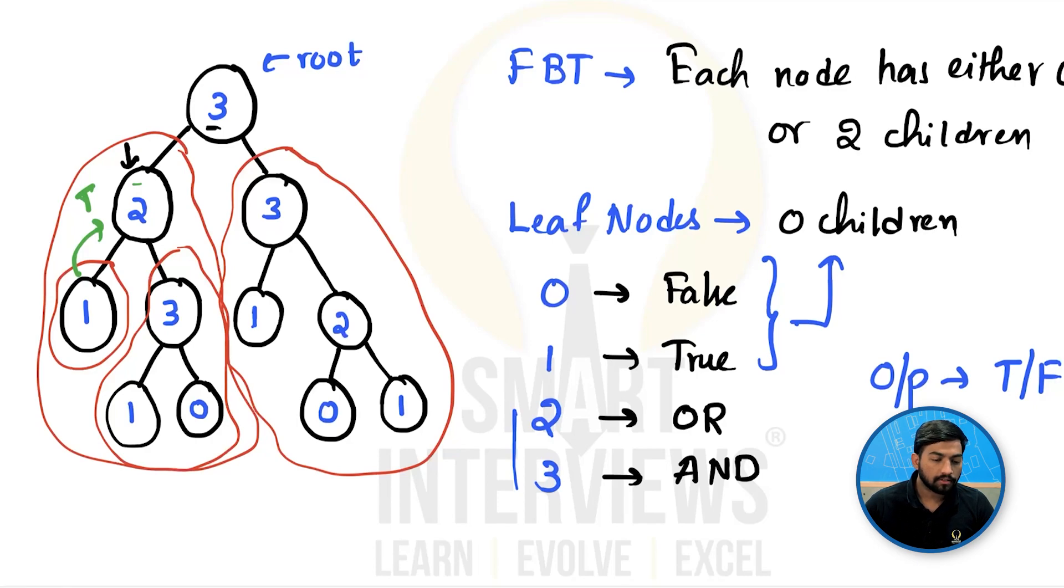Now this node here has got true from the left. Let's go to the right. We have three here. Again it has two children, one and zero. So let's go to the left. We have one. Since one is true, we pass back true. Zero is false. We pass back false. Since three is AND, true AND false is going to be false. So for this tree, the result is false and we return back the result which is false.